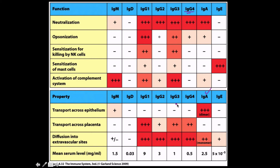IgG antibodies have high affinity for transport across the placenta. Interestingly, infants have been diagnosed with HIV because ELISA tests detected HIV antibodies — those antibodies came from the mother. IgG levels rise in HIV-infected patients, so infants were testing positive without actually being infected; they simply received maternal IgG. IgG is also very efficient at diffusion into extravascular sites, while monomeric IgA is somewhat efficient but not nearly as much.